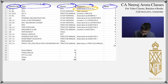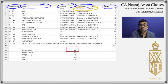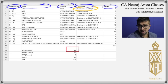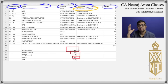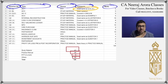Look — 42 marks come from the study material. 42 marks! And 49 marks come from the practice manual. The current RTP accounts for 9 marks, which is 20 numbers in the paper. If you have a good accounts teacher, they can find where those 20 number questions come from.